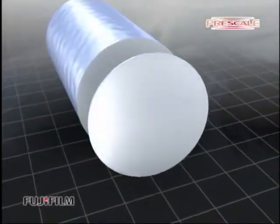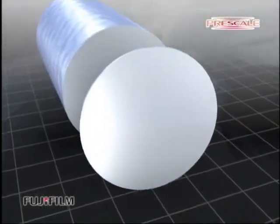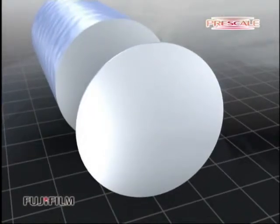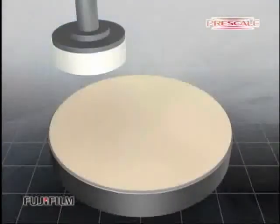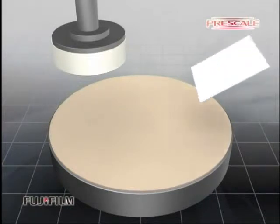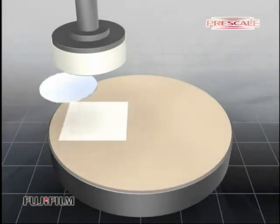The next application is a measurement of a silicon wafer surface polishing pressure. Place a pre-scale that is slightly bigger than the wafer on the rotating level block.